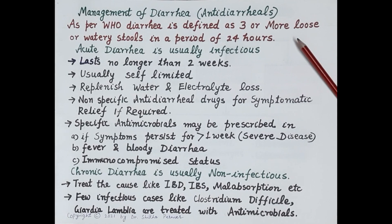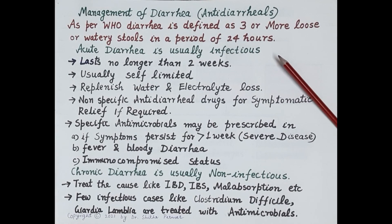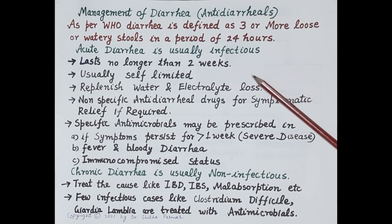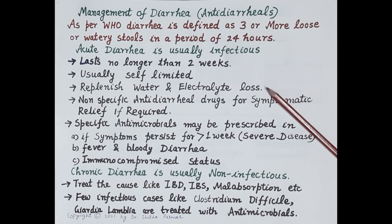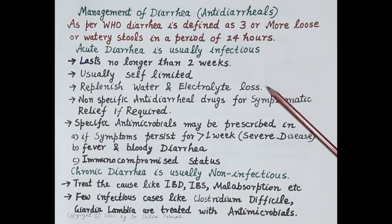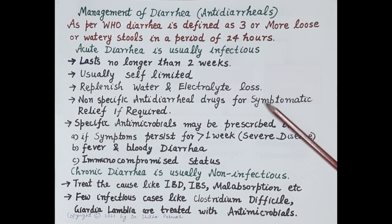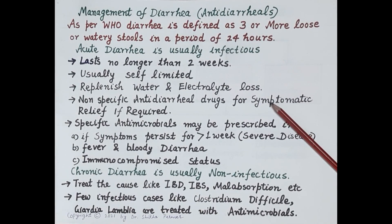while chronic diarrhea lasts for more than four weeks. Acute diarrhea is usually infectious but mostly self-limited and cures on its own within four to five days. The primary goal of therapy is to prevent dehydration, so replenish water and electrolyte loss by administration of oral rehydration therapy (ORT). Non-specific antidiarrheal drugs like antisecretory drugs and antimotility drugs may be used for symptomatic relief if required.